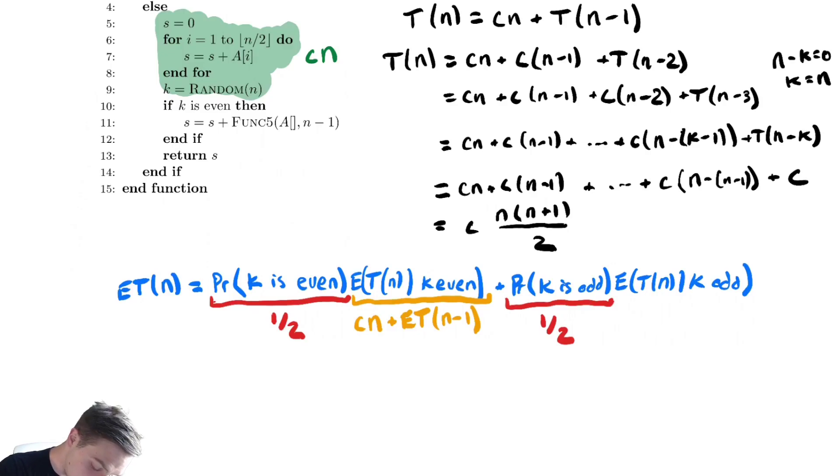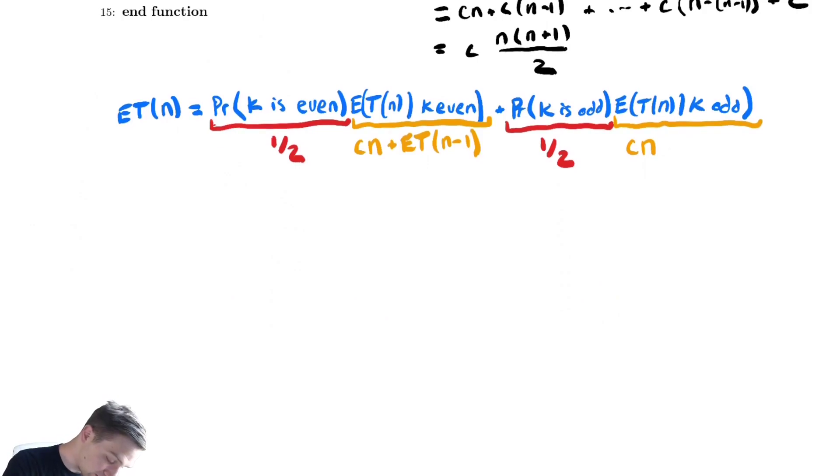Our last term over here, the expected value when k is odd, well if k is odd we still do that for loop, but then we do not make the recursive call, so we have cn over there. Let's use all this information together, we get ET(n) equals 1/2 times cn plus ET(n-1) plus 1/2 times cn.